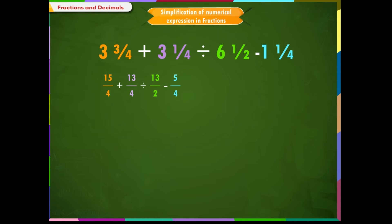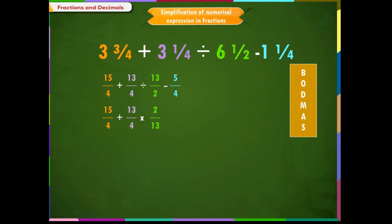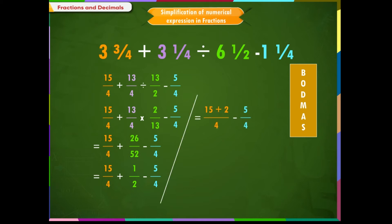Step 2: Since there is no bracket and no 'of' in this problem, as per BODMAS, the next operation is division. Dividing 13/4 by 13/2 gives: 15/4 plus 13/4 multiplied by 2/13 minus 5/4. This gives 15/4 plus 26/52 minus 5/4. Step 3: Add 15/4 plus 1/2. Taking LCM of 2 and 4, which is 4: 15 plus 2 by 4 equals 17/4.